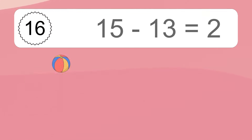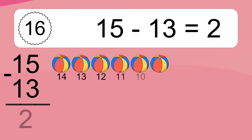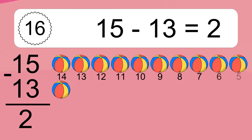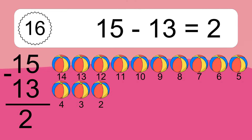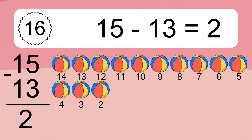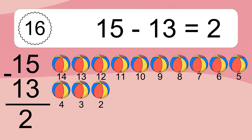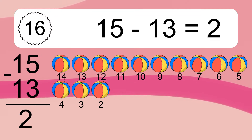15 minus 13 equals what? 15 minus 13 equals 2. Let's count it: 14, 13, 12, 11, 10, 9, 8, 7, 6, 5, 4, 3, 2.